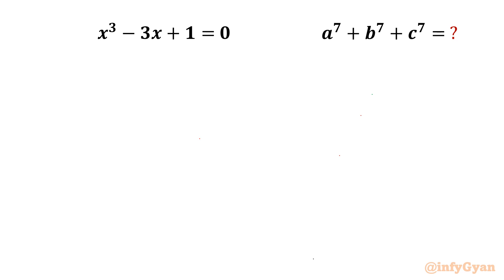Welcome back to Infigyan friends. In this video we are going to take up one algebraic challenge from the cubic equation x³ - 3x + 1 = 0. We have to find out the sum of the 7th power of the roots: a⁷ + b⁷ + c⁷. I will use calculus to solve this problem. We have already seen how to solve such problems using algebra, but in this video we are going to use calculus — specifically Newton's theorem.